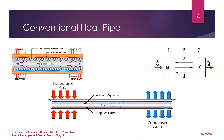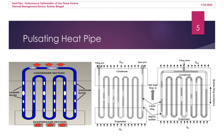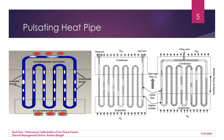An internal wick structure is provided in most heat pipes, which are considered conventional heat pipes. A pulsating heat pipe involves pulsating flow — alternate liquid and vapor slugs are responsible for heat transfer. Heat transfer takes place either in terms of sensible heat as well as latent heat.